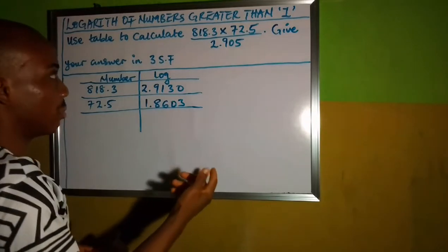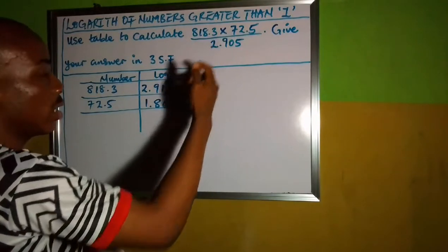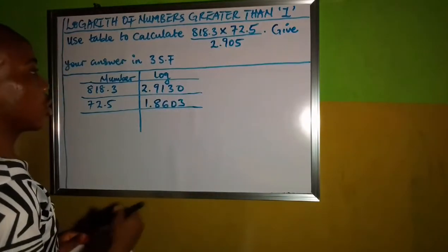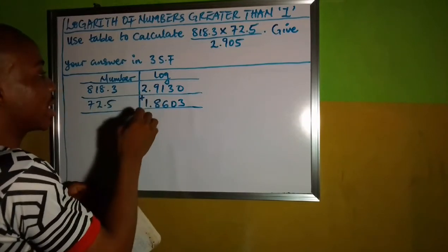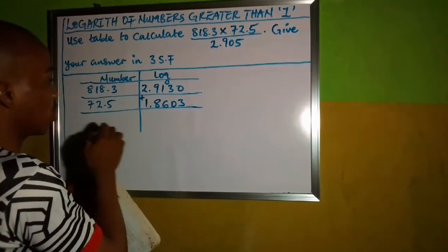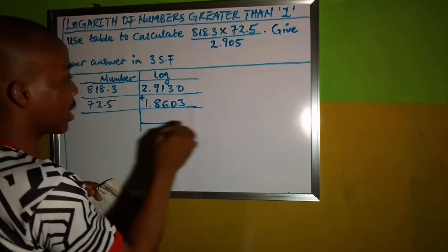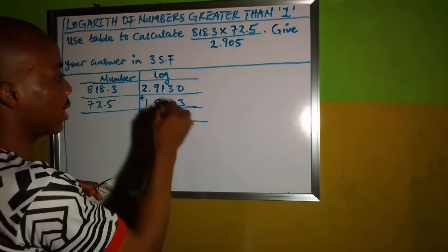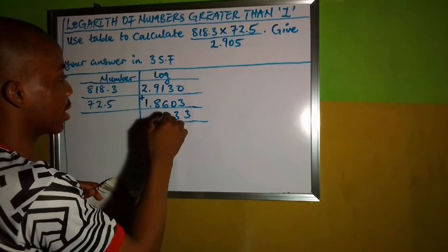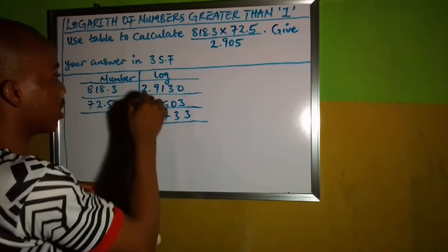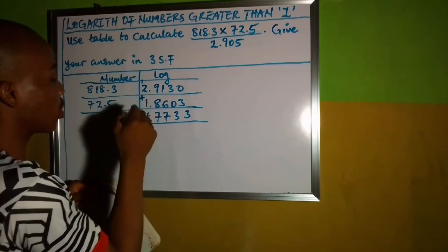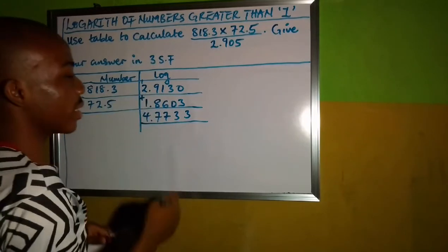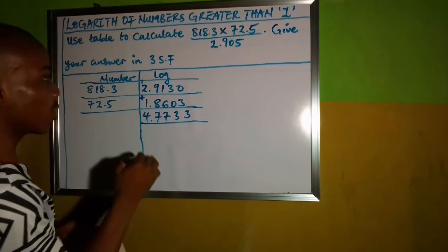Now, from the law of log reading, multiplication is addition. So we have found the figures of these in log. So what we do next is that we are going to add these figures. This is 3, this is 3, this is 7, 9 plus 8 is 17. 1 plus 2, 3 plus 1, 4. So we have it as 4.7733.